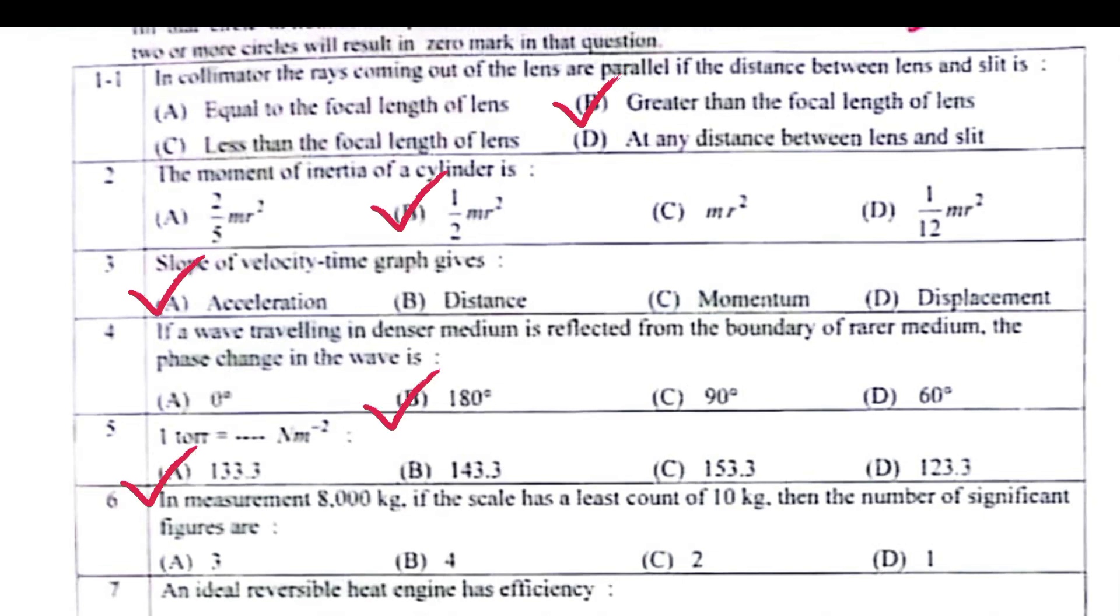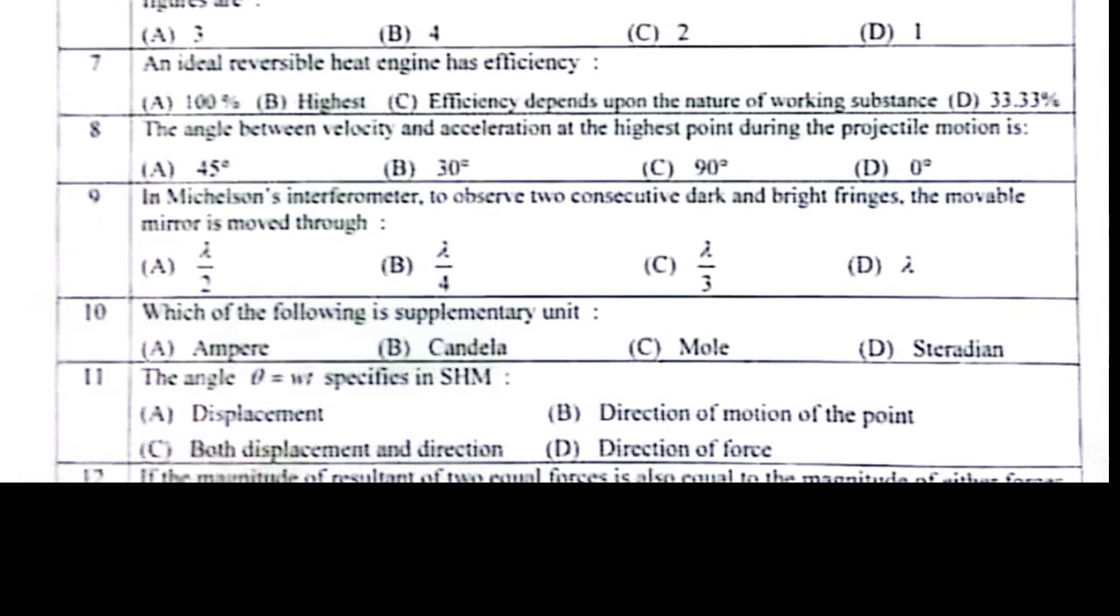An ideal reversible heat engine has efficiency 100 percent. The angle between velocity and acceleration at the highest point during the projectile motion is 90 degrees.